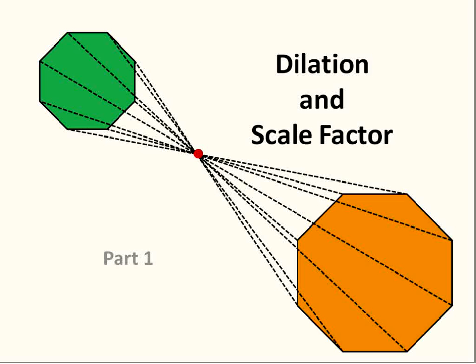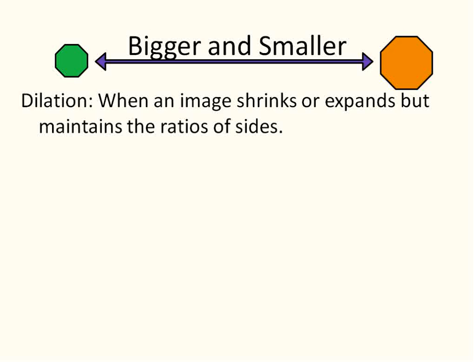Hey, we're going to look at dilation and scale factor in this lesson. This is lesson one of two, so the first part we're going to try and discuss what this is. By the end of it, you'll know what all of this means — these weird octagons there, green and yellow.